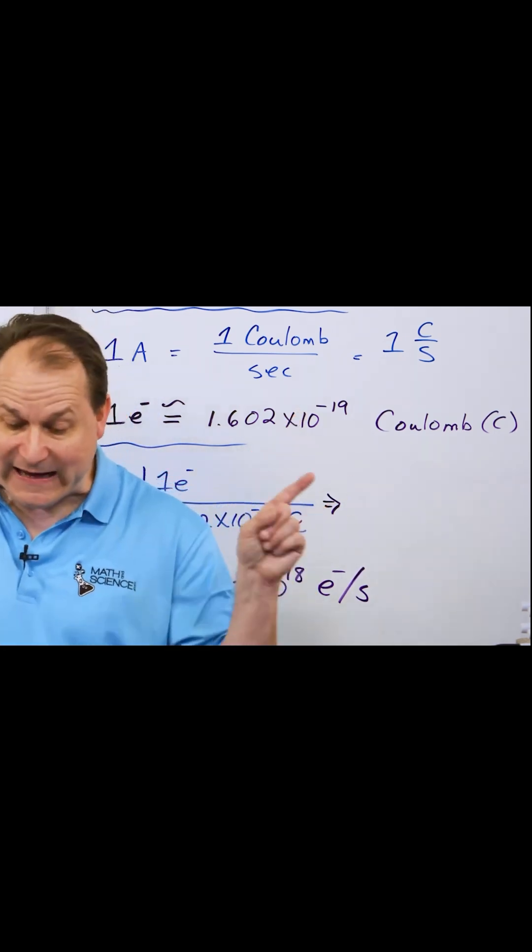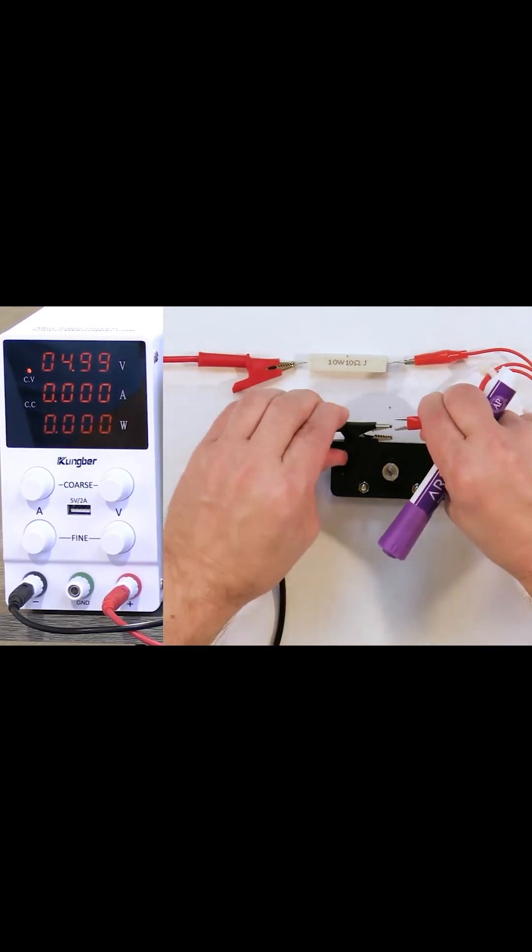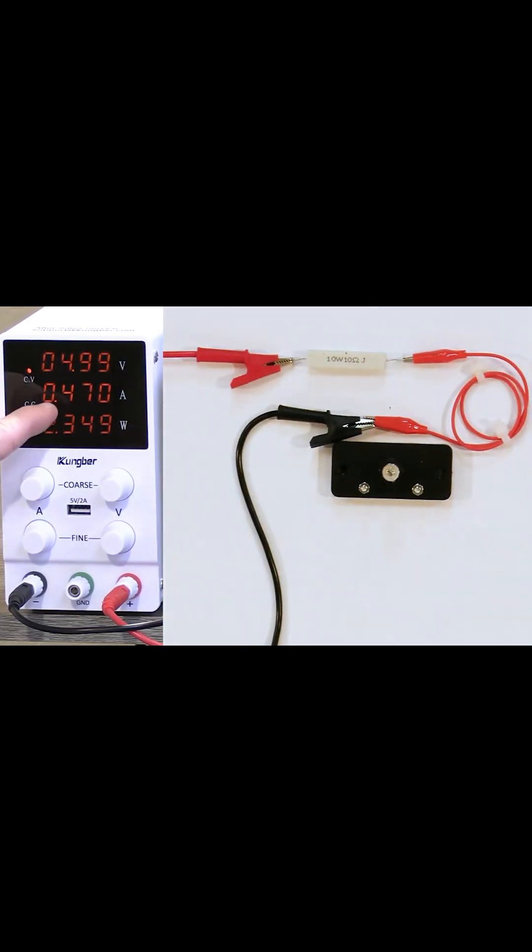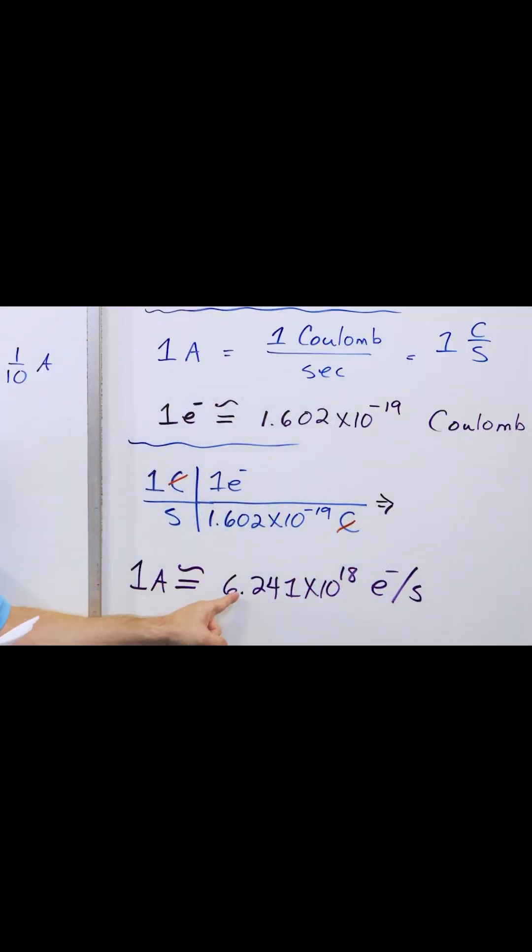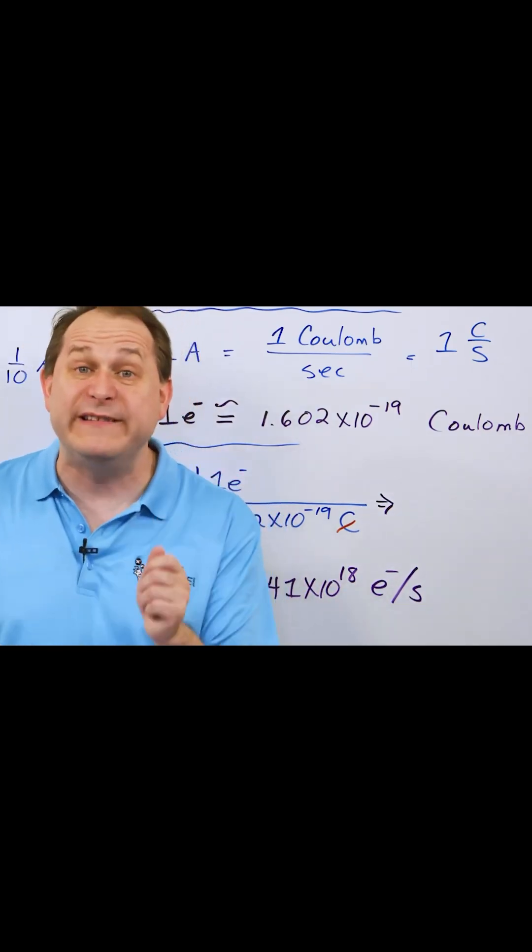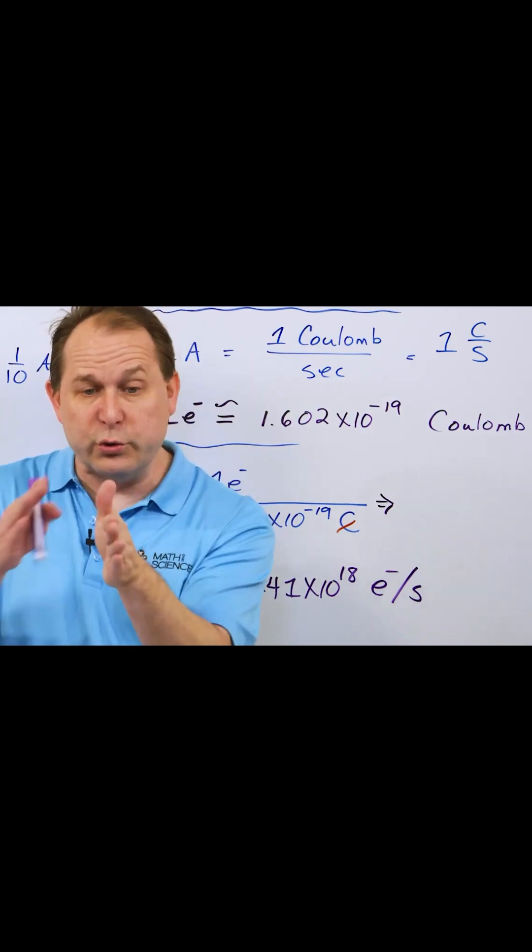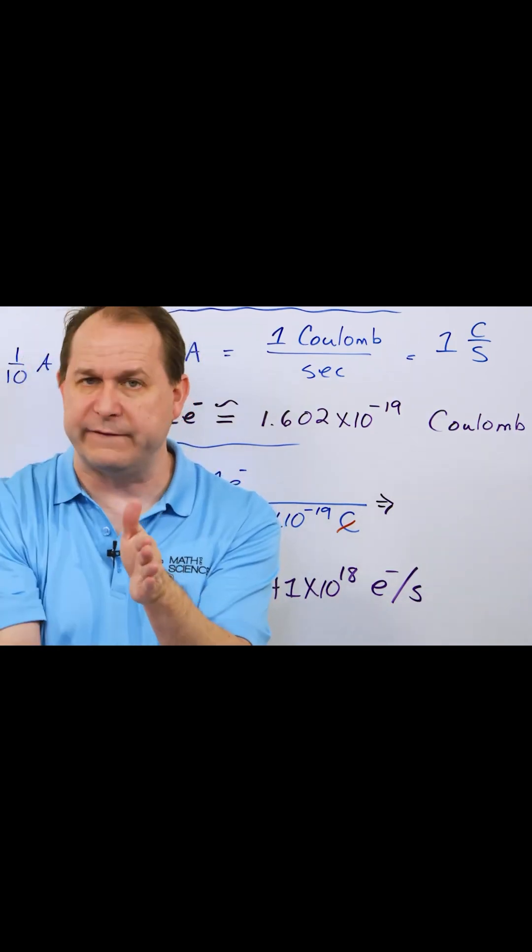So when I connect this thing over here, like I'll just do right now, and it's telling me 0.470 amps are flowing out of this thing - since it's pretty close to about a half, it's about a half of this number. So three point something times 10 to the 18 electrons every single second flowing through this wire. If you slice the cross section of this wire,